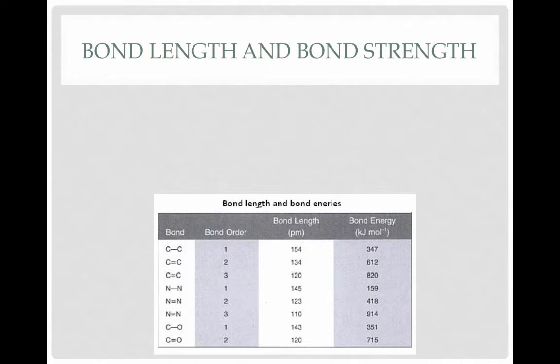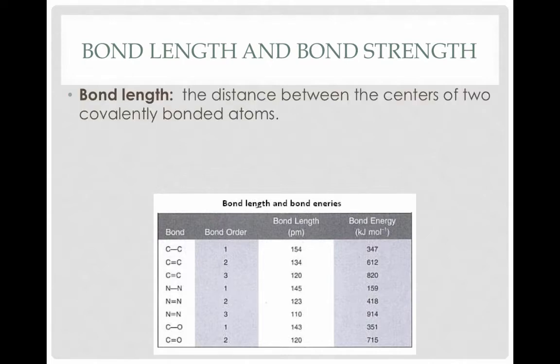This relates to bond length and bond strength. Bond length is the distance between the centers of two covalently bonded atoms. There's a chart showing bond length. At the top of the chart we see a CC bond—a single carbon-carbon bond. Bond order means what kind of bond it is: single, double, or triple. The bond length in picometers is 154 and the bond energy is 347. Take a look at the table and try to see patterns in how single bonds compare to double bonds compare to triple bonds. You might want to pause the video and see if you can figure out this pattern on your own.